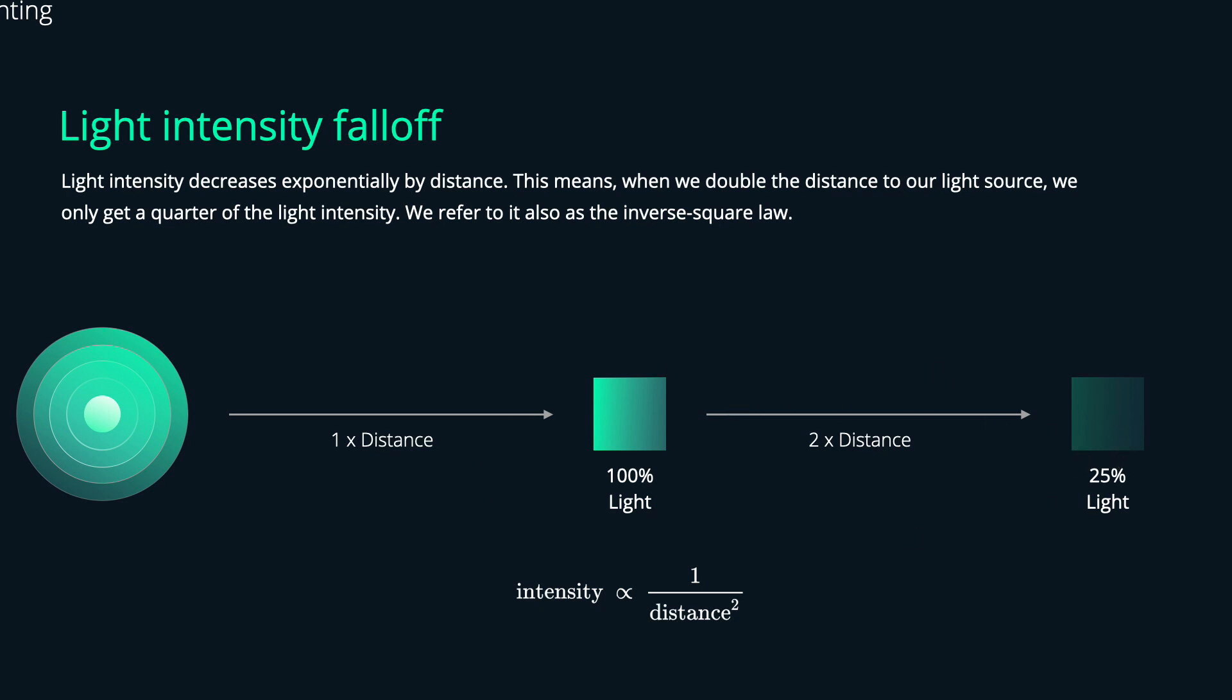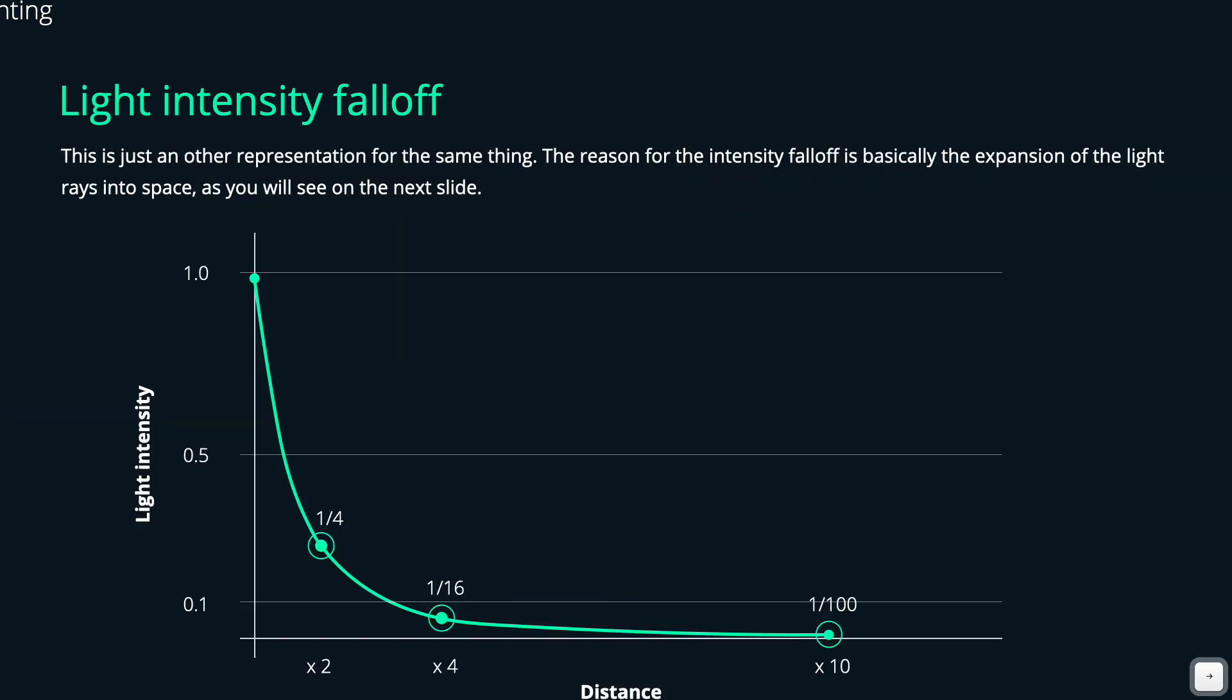That's quite important to keep in mind when you position lights in your scenes. The closer your object is to the light source the brighter or the more intense the light will be. If you move your light source farther away from your object the less light you will get on your object. We will also see all of this in Cinema 4D in a second.